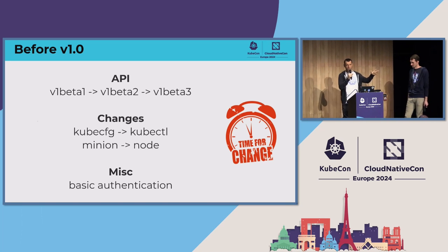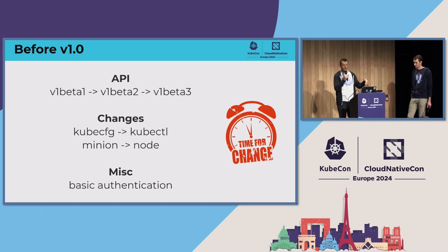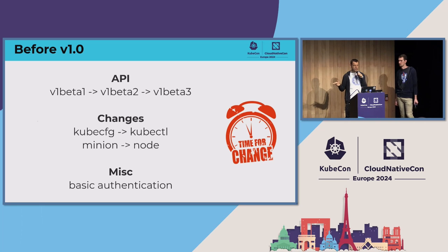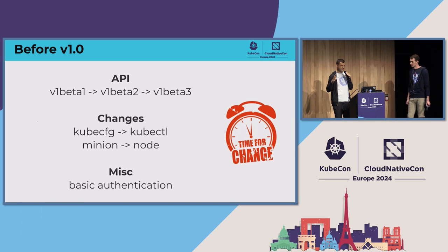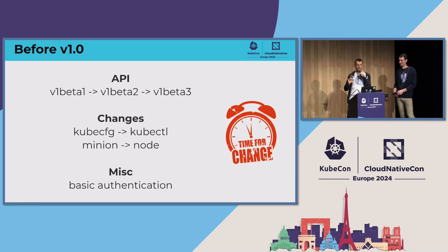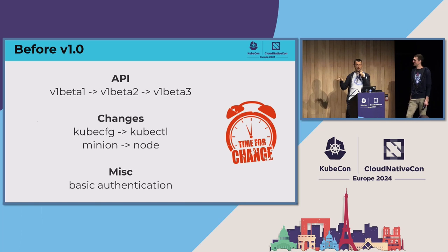That could also be seen from the user point of view, because we quickly went through V1 Beta 1 to V1 Beta 2, all the way up to V1 Beta 3, eventually settling on V1. A lot of those changes required us to write a lot of the code that is currently called API Machinery. Minion was renamed to Node around 0.5 or 0.6. The interesting one: did anyone try KubeCFG before it was called kubectl? Around 0.5, towards the end of 2014 and early 2015, we renamed the project and gave it its current shape.